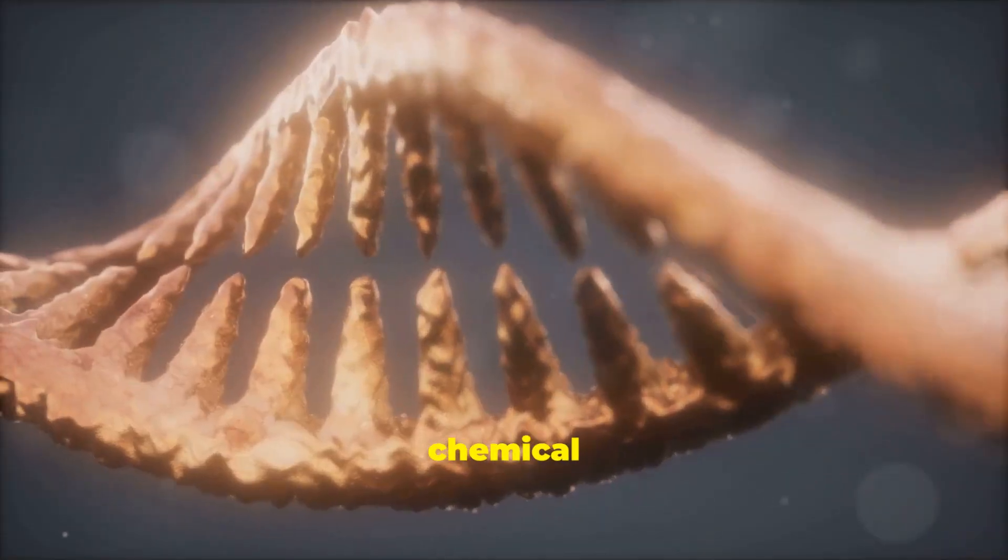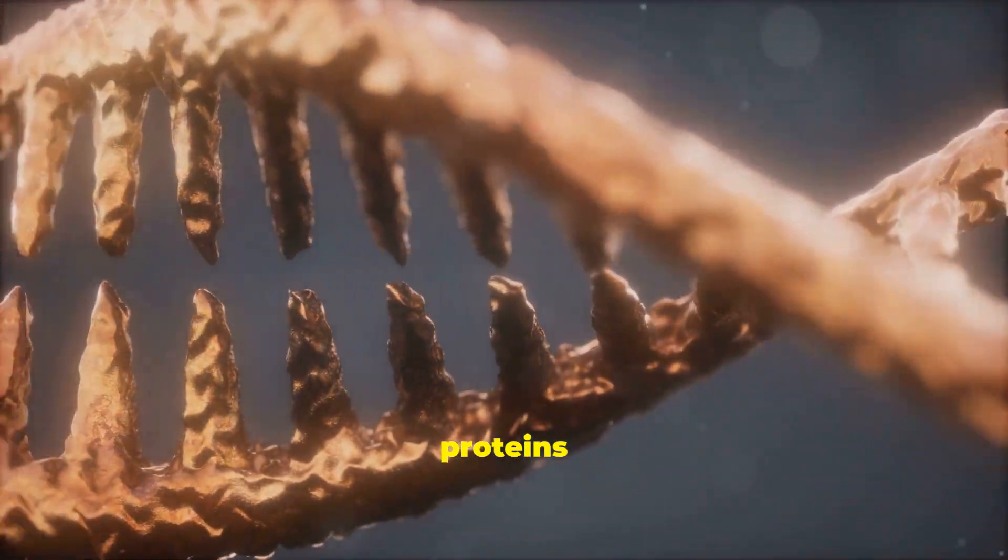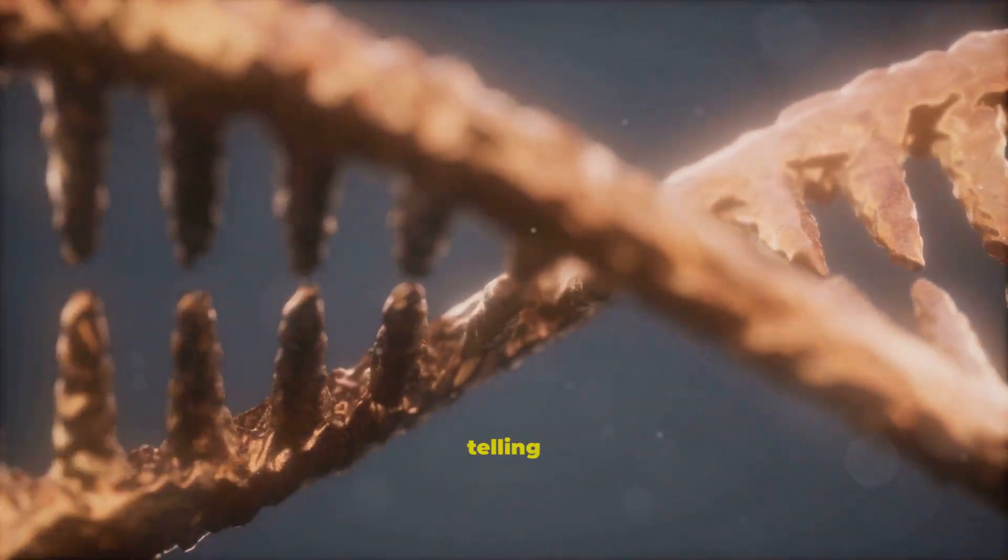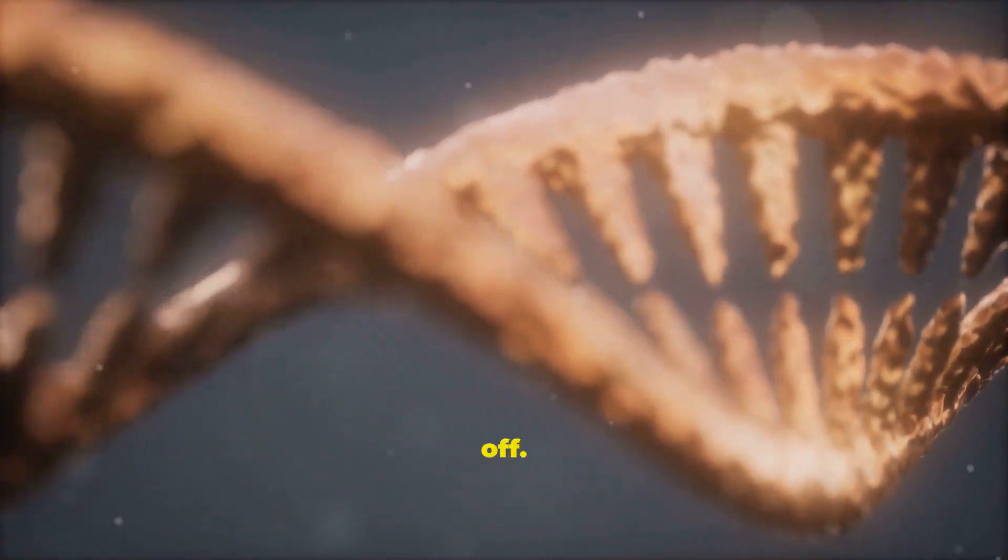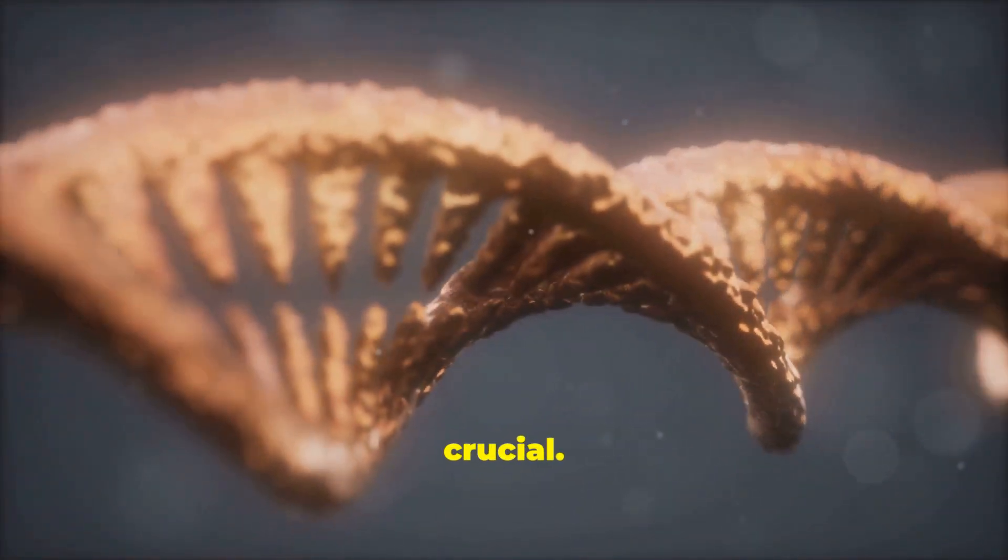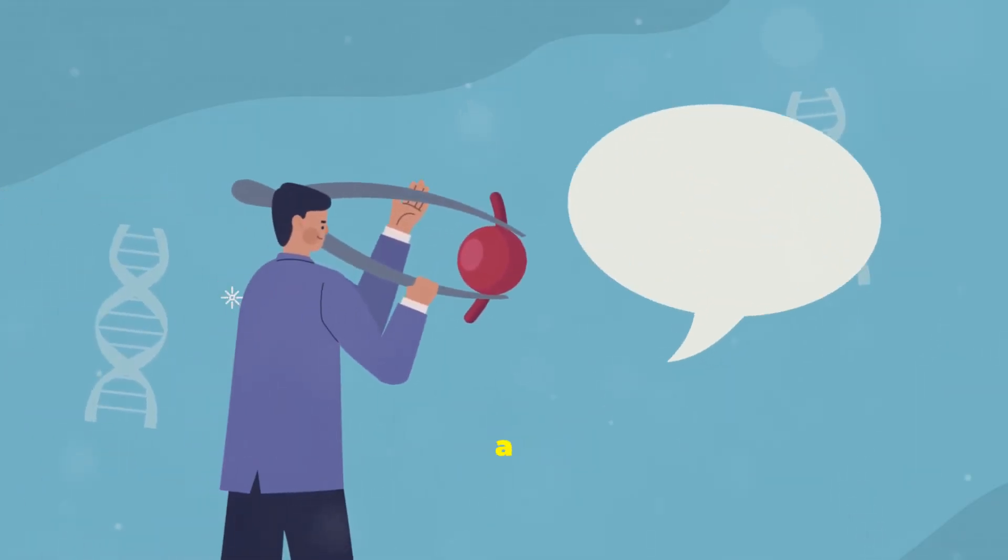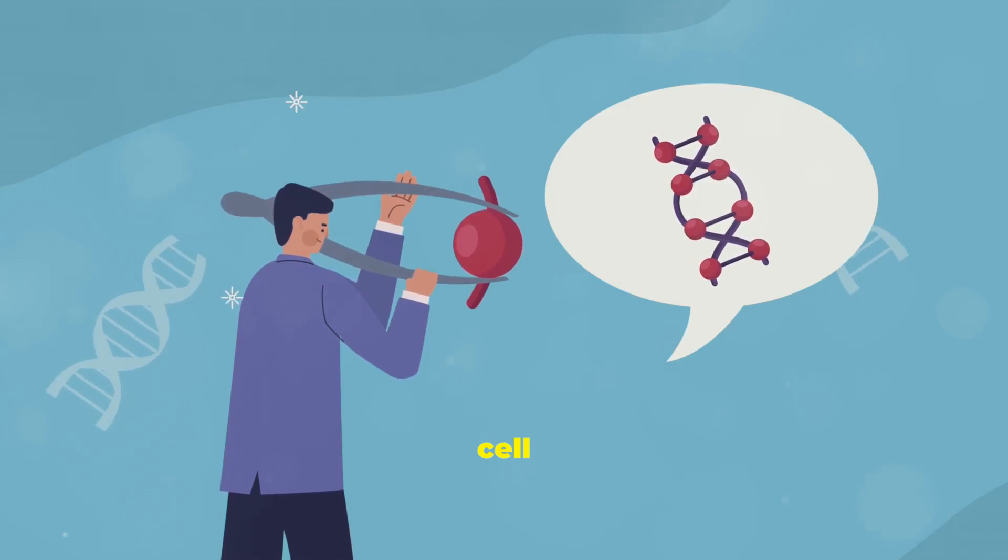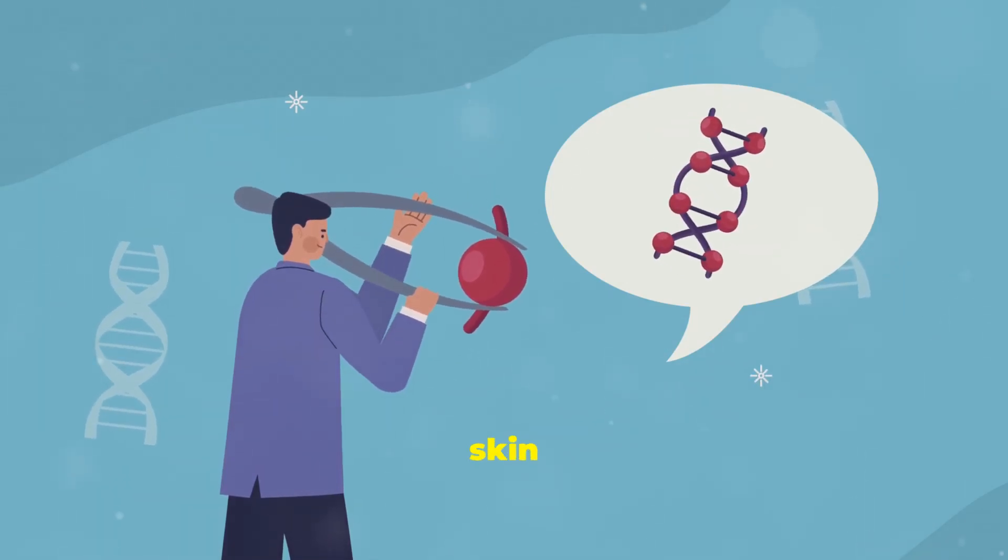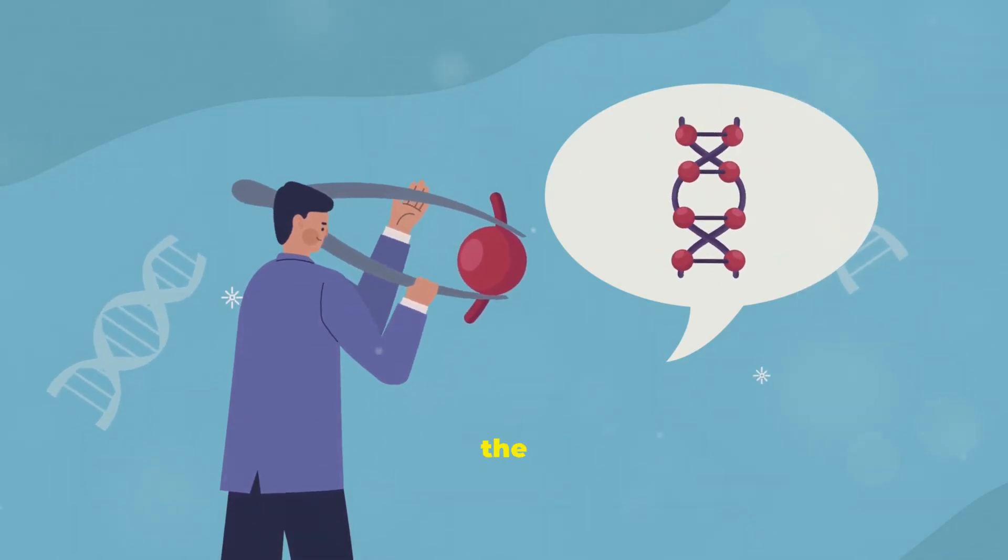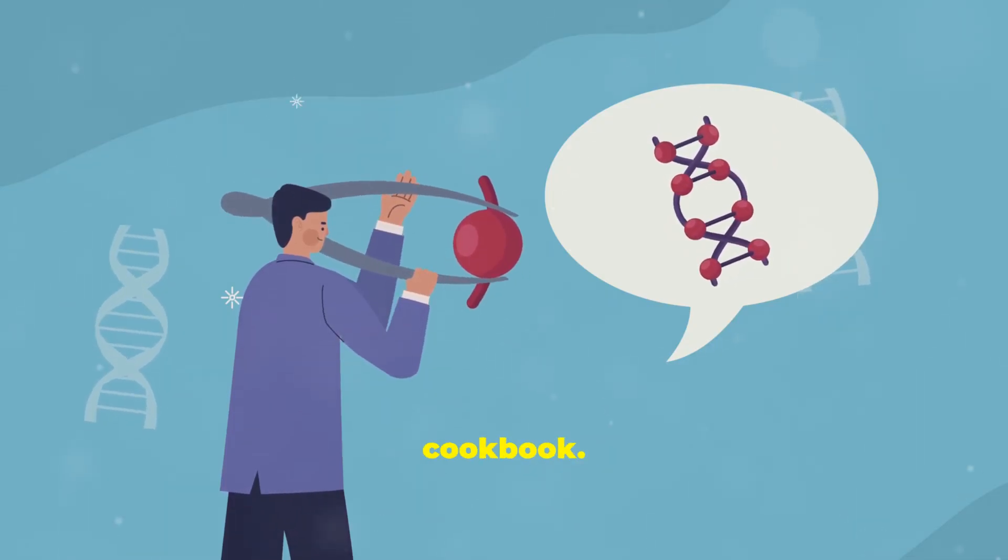It's a complex layer of chemical markers and proteins that sit on top of our DNA, telling our genes when to switch on and off. This system is crucial. It's what allows a heart cell to be a heart cell and a skin cell to be a skin cell, even though they have the exact same DNA cookbook.